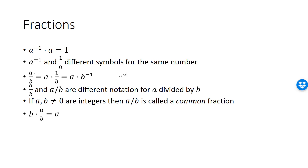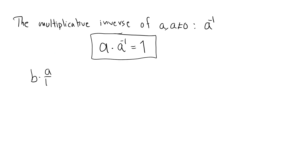We have the following fraction result: B times A divided by B is equal to A, where B cannot be 0. Instead of trying to visualize this, just view it as manipulating meaningless symbols. By the definition of division, B times A over B equals B times A multiplied by B inverse. By the commutative law for multiplication, we can interchange the last two terms and write this as B times B inverse times A. By the definition of multiplicative inverse, the product of B with its multiplicative inverse is 1, and 1 times A is A.